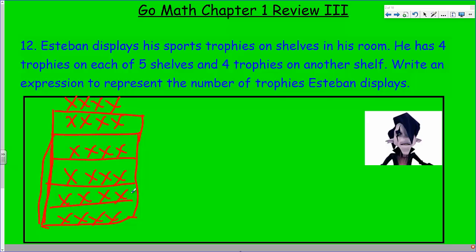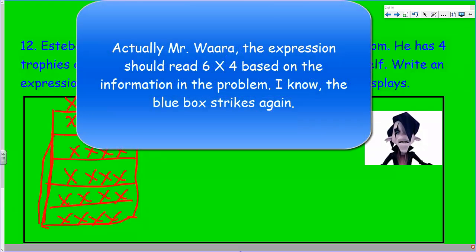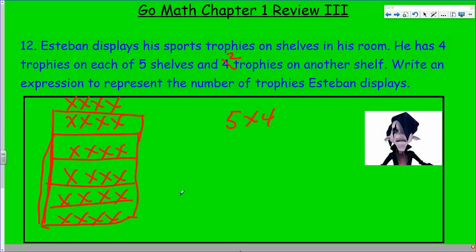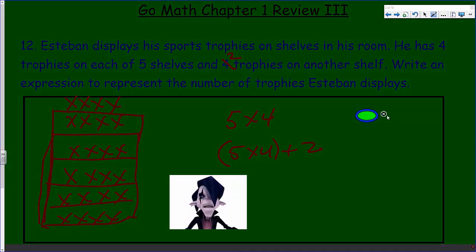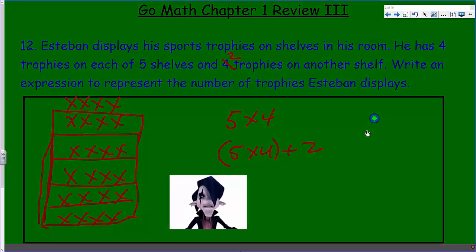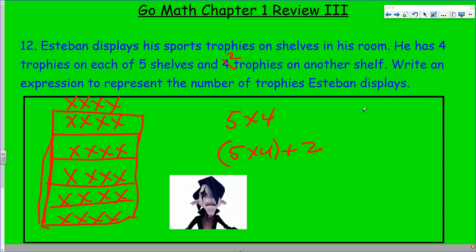Write an expression to represent the number of trophies Esteban displays. So we have five shelves, so it's just like five times four. Now had I put different numbers in, let's pretend I put a two there instead, so now we could show five times four plus two. They wanted you to write an expression such as that. Pretty straightforward, nothing tricky about this one.